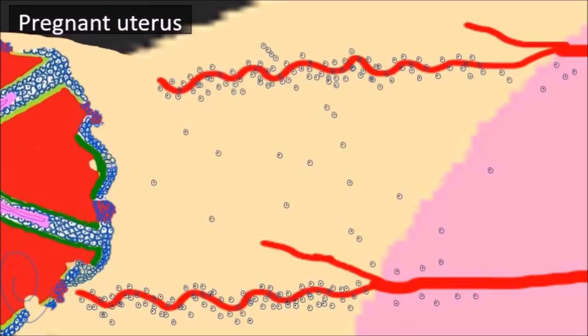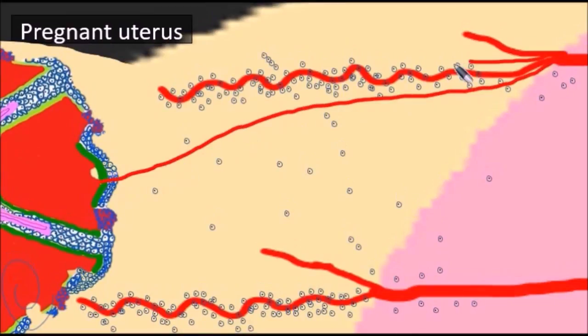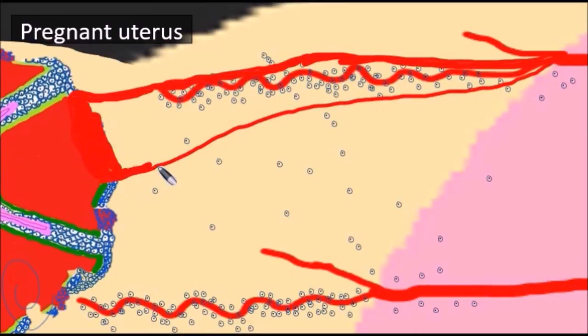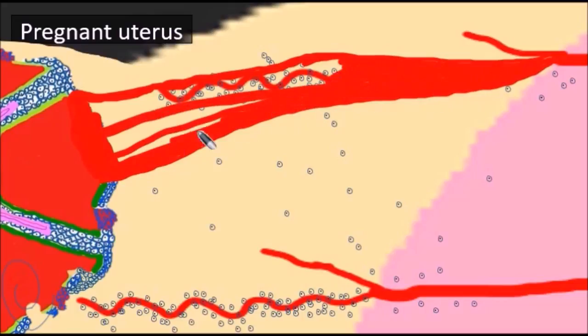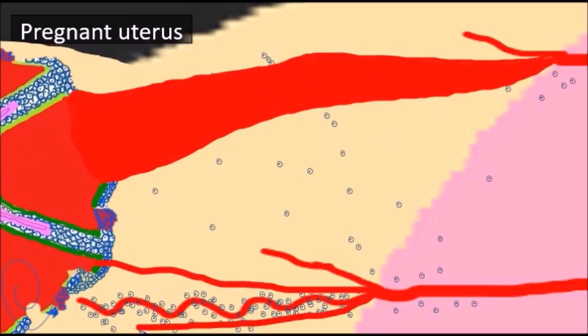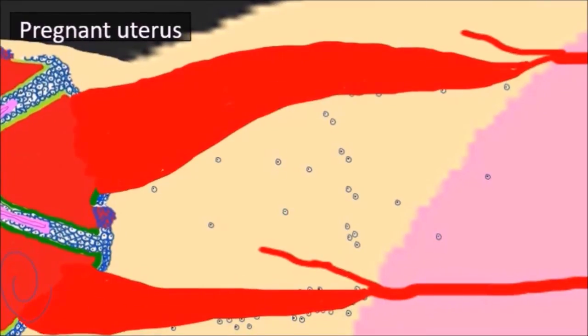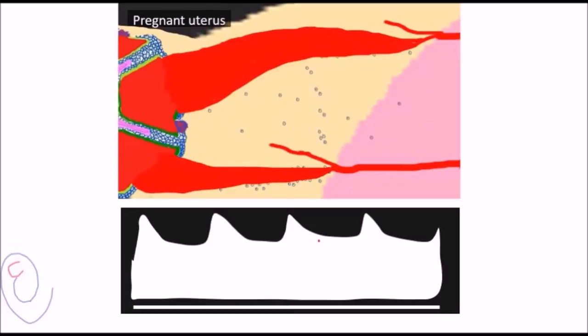This trophoblastic invasion results in remodeling of the spiral arteries, in which the spiral arteries become dilated capacitance vessels with very low resistance. These changes alter the shape of the uterine artery Doppler. The notch will disappear and the end-diastolic flow will markedly increase.